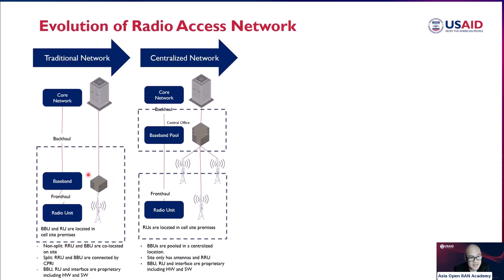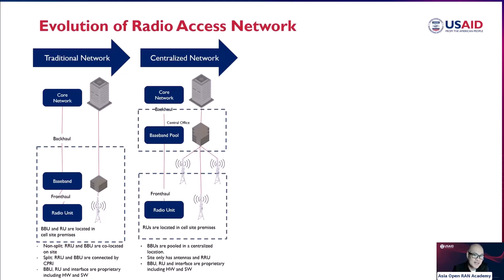What happened in the centralized network is that the baseband unit, previously located at the premises of the cell site, is now located in a central office — it's pooled together. We call it the baseband pool, and in some terminologies or references you will read it as a 'baseband hotel.' Those basebands are pooled together in the central office for ease of maintenance, connected using fiber optic — including dark fiber, which are spare fibers that operators use.